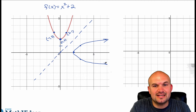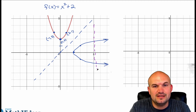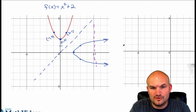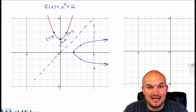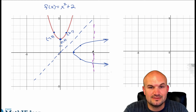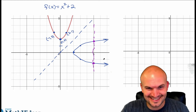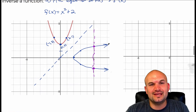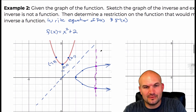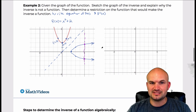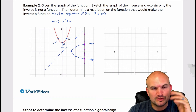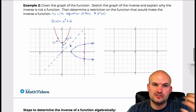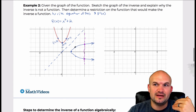We know that the inverse is not a function because it doesn't pass the vertical line test — when a vertical line crosses the graph more than once, it's not a function. So the question is: can we go ahead and write a restriction that would make this a function? Can we restrict our original function f(x) so that when we find the inverse, it is going to be a function?